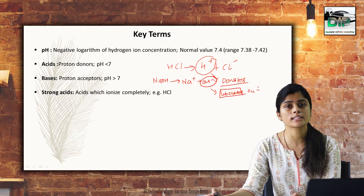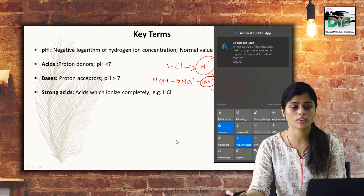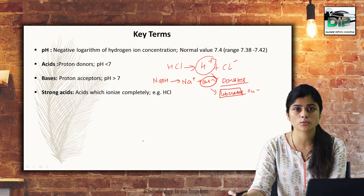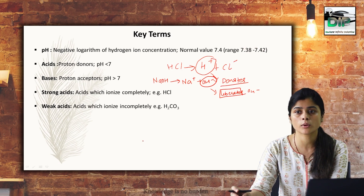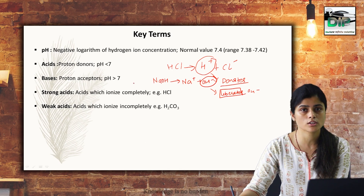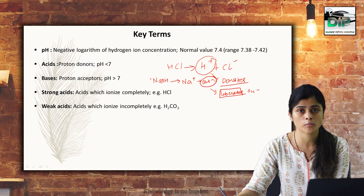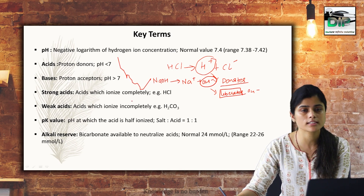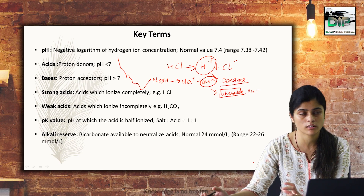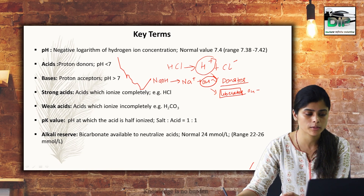Strong acids are those which completely dissociate, like hydrochloric acid and sulfuric acid. Weak acids dissociate partially or incompletely, which is where the dissociation constant becomes important. The most important weak acid in our body is carbonic acid. Similarly, strong bases dissociate completely, while weak bases dissociate partially — around 50% of their concentration.